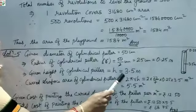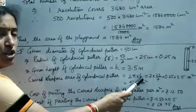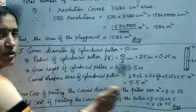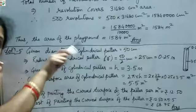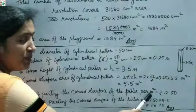The curved surface area of the cylindrical pillar = 2πRH. Putting in the values of R and H, on simplification we get 5.5 m². This is the curved surface area of the cylinder to be painted.